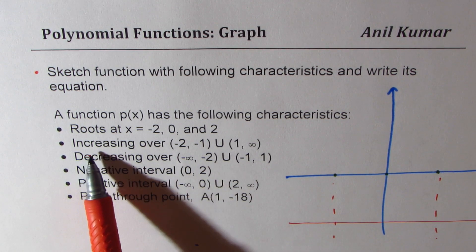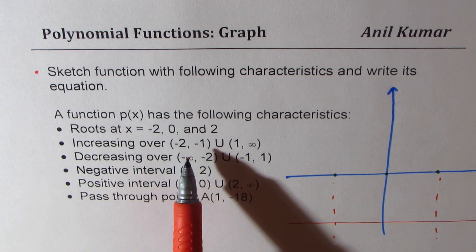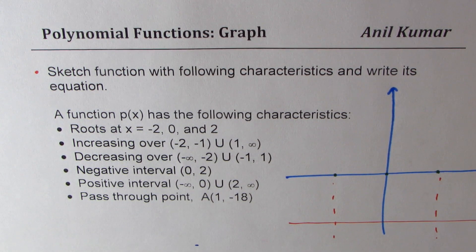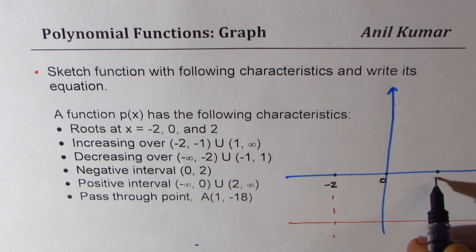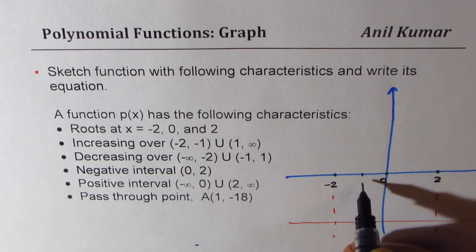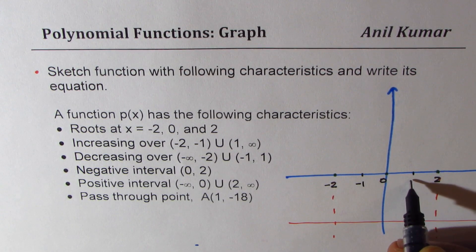It says increasing over minus 2 to minus 1. So this is minus 2 for us. Here we have 0, here we have 2, and let us say here we have minus 1 and then we have 1 here.